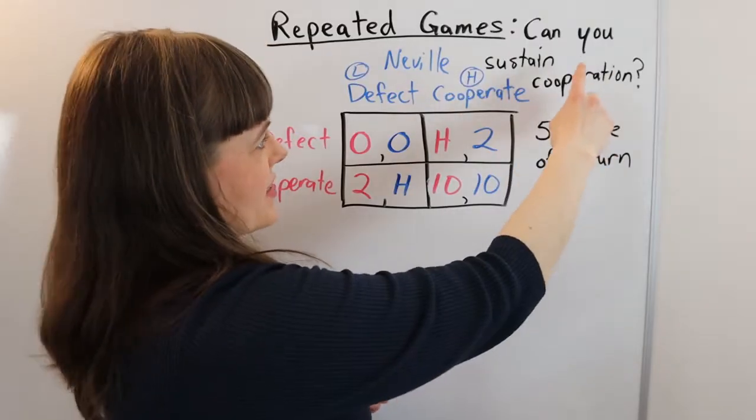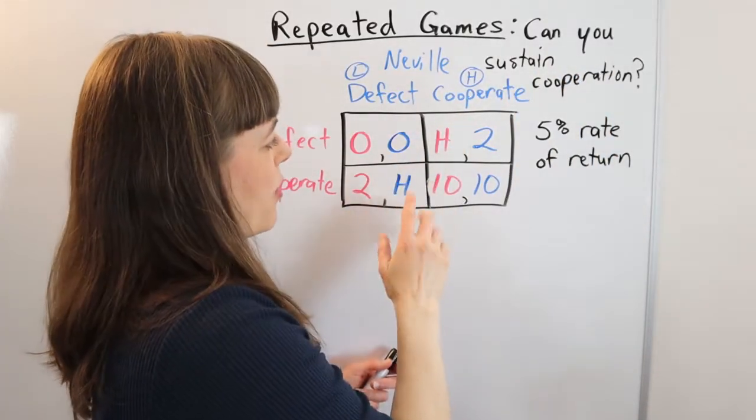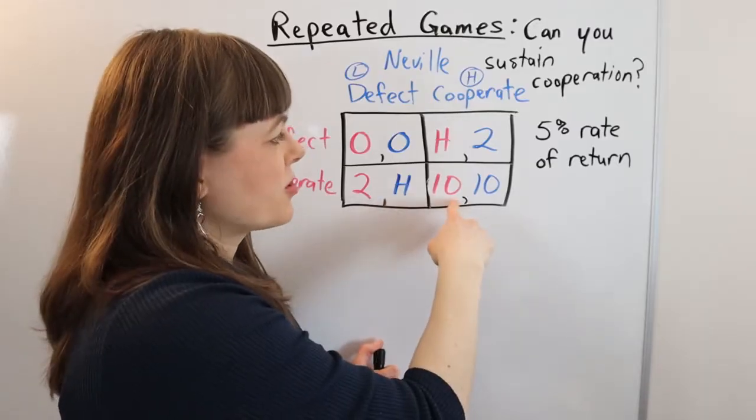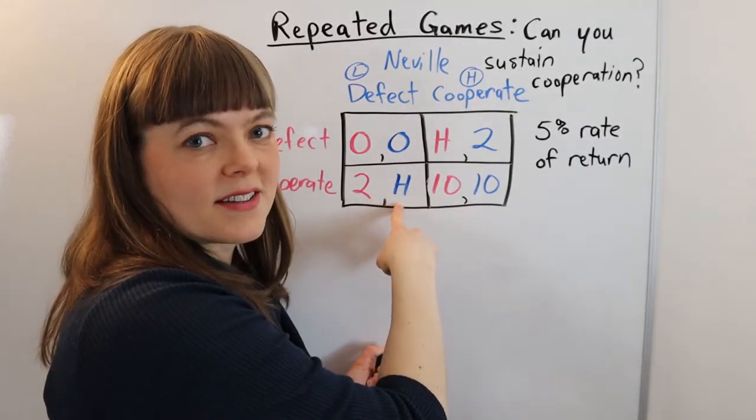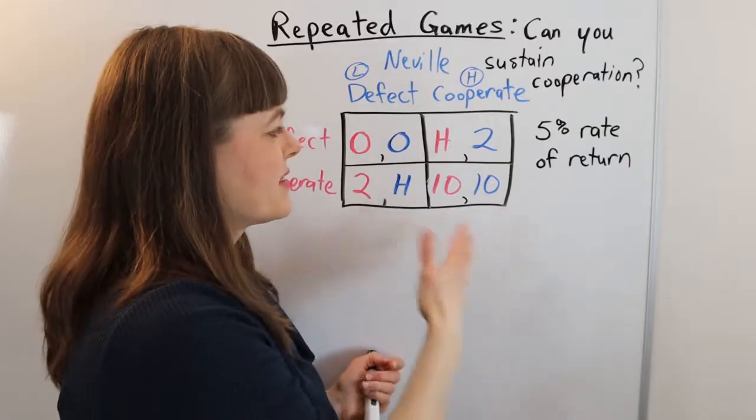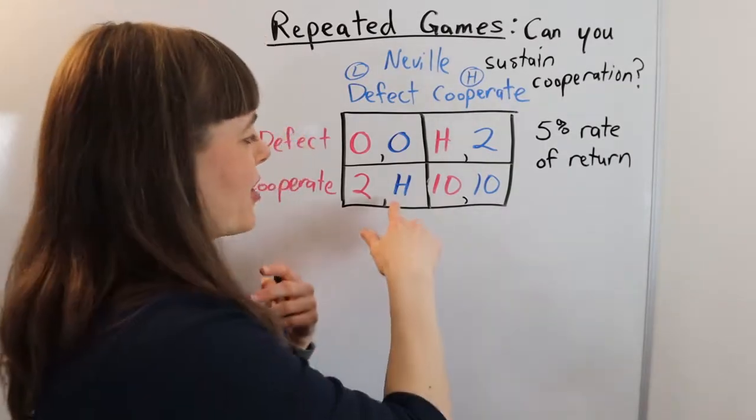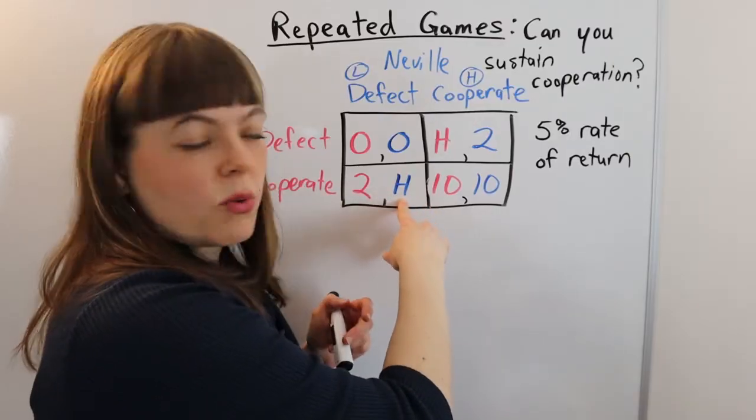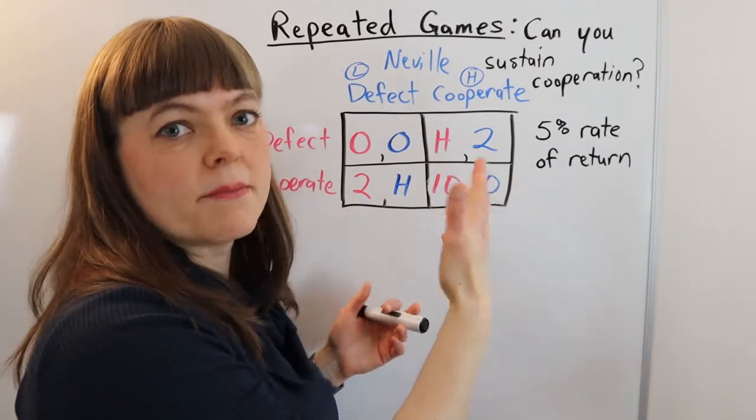So that's the question we're asking here. In this scenario where H is the windfall, if the other person cooperates and you defect, this is basically if the other person has a high price, you set a low price and you soak up all of the market. How much will you get in that case? Well, H is that amount.